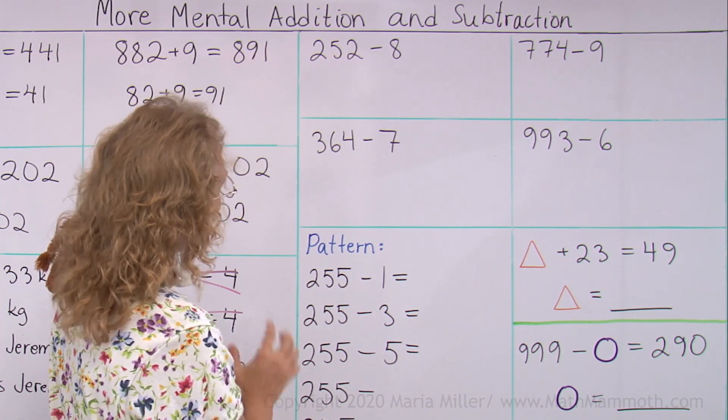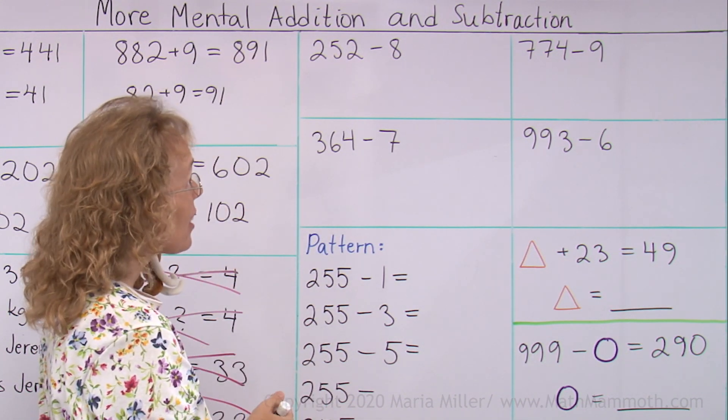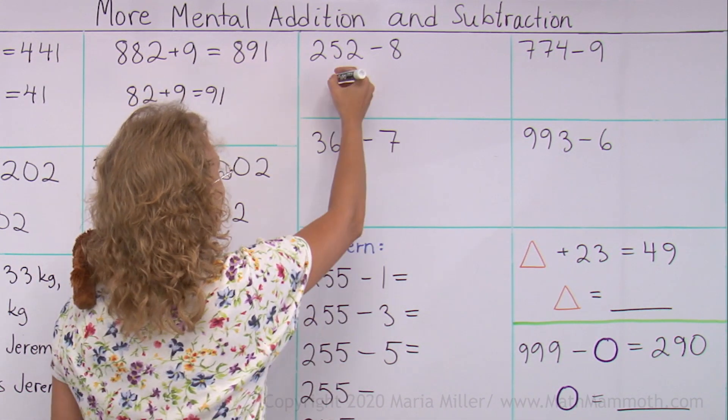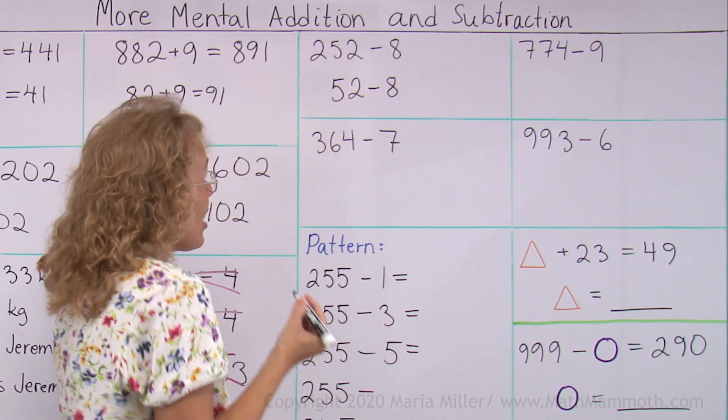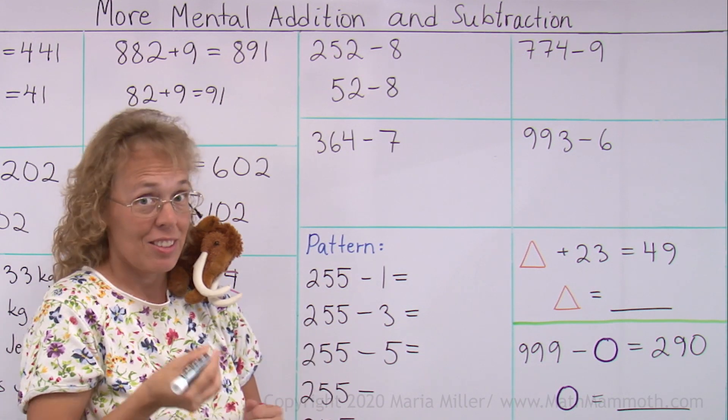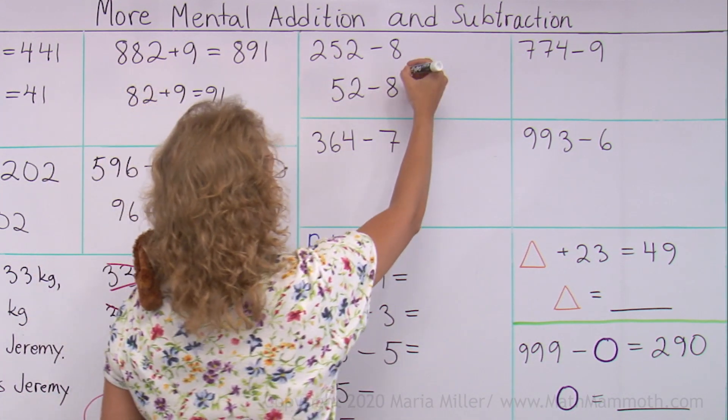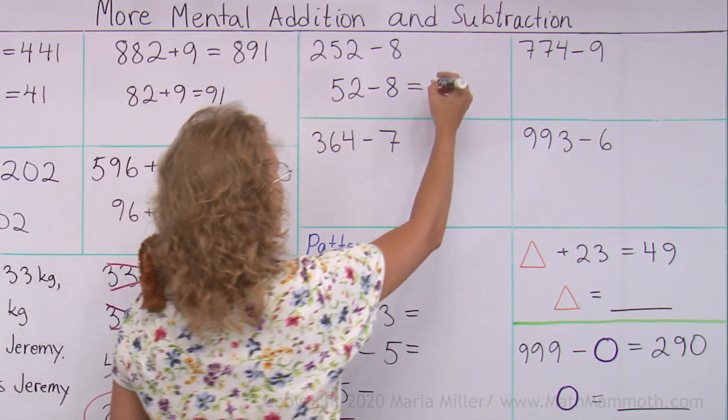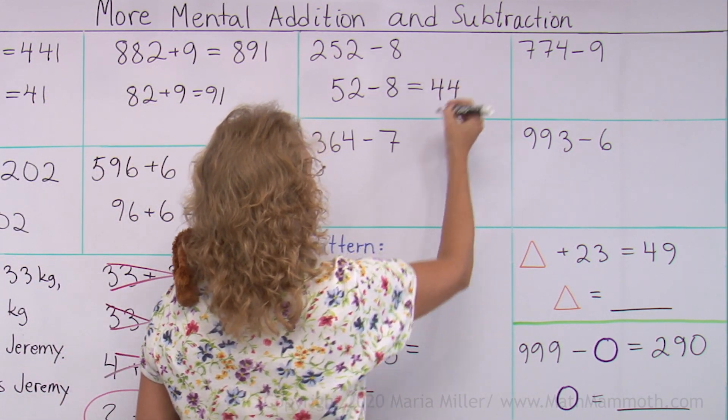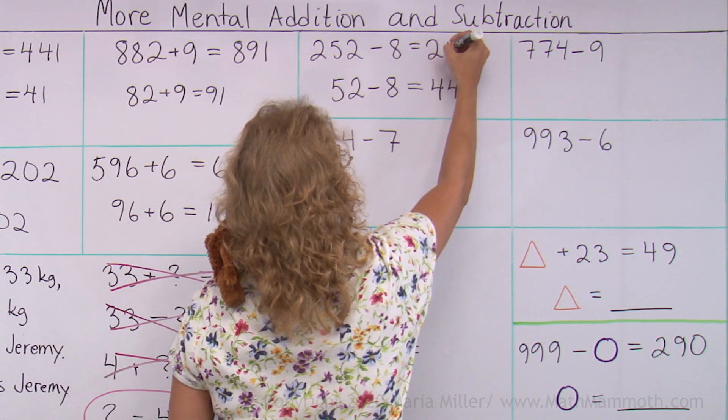Over here, we're going to subtract 252 minus 8. Again, your helping problem is this 52 minus 8. Which that one you can solve in different ways. As far as mentally, you could think of 52 minus 2 minus 6. So we get 44. And so this one, of course, is then 244.